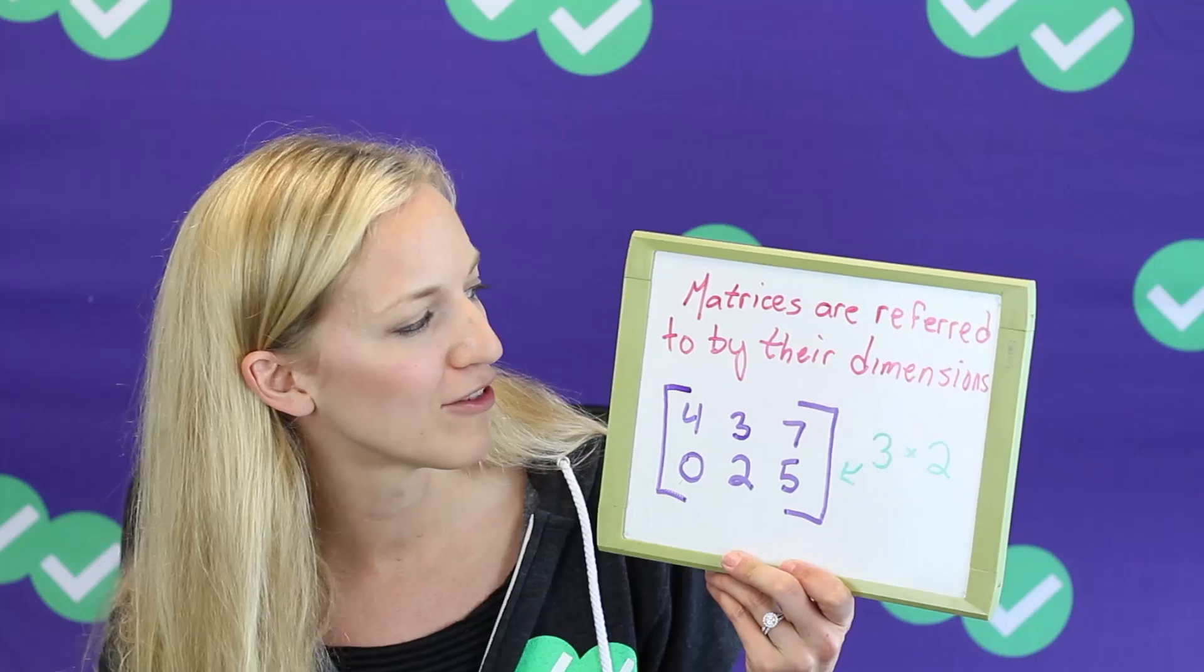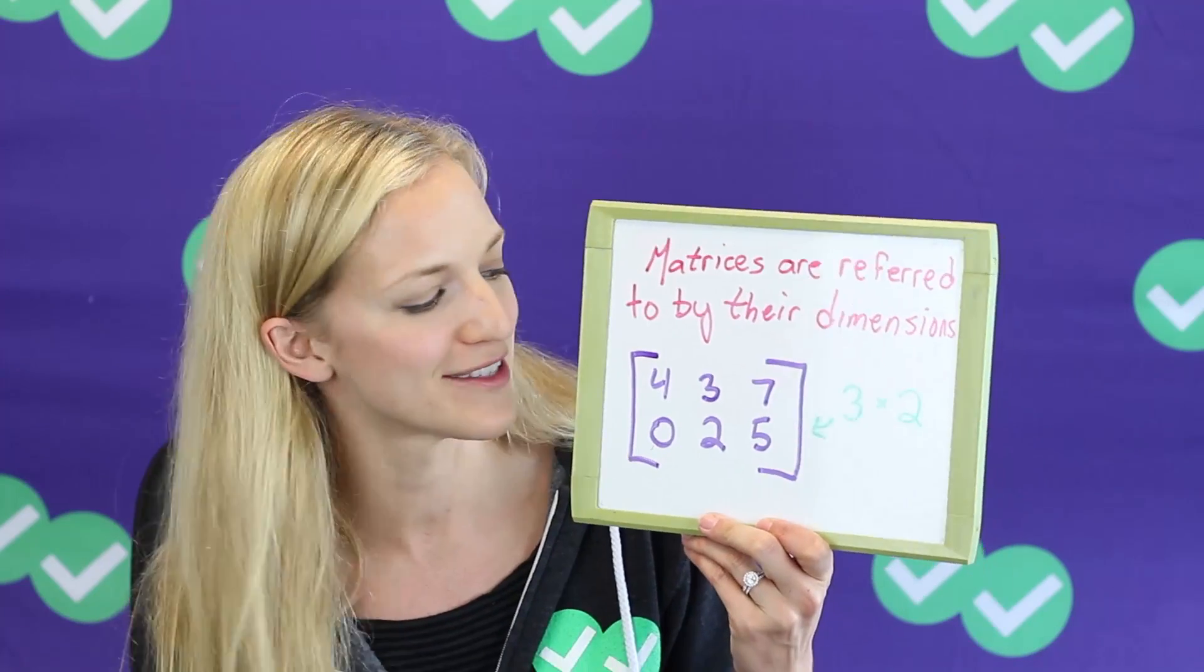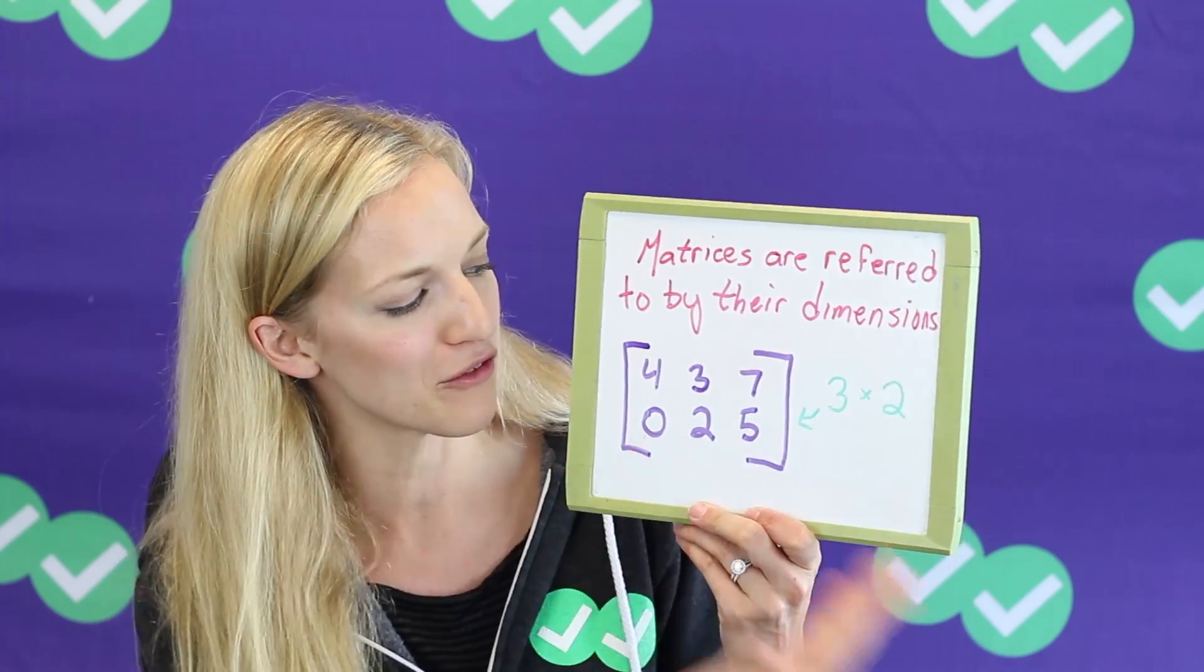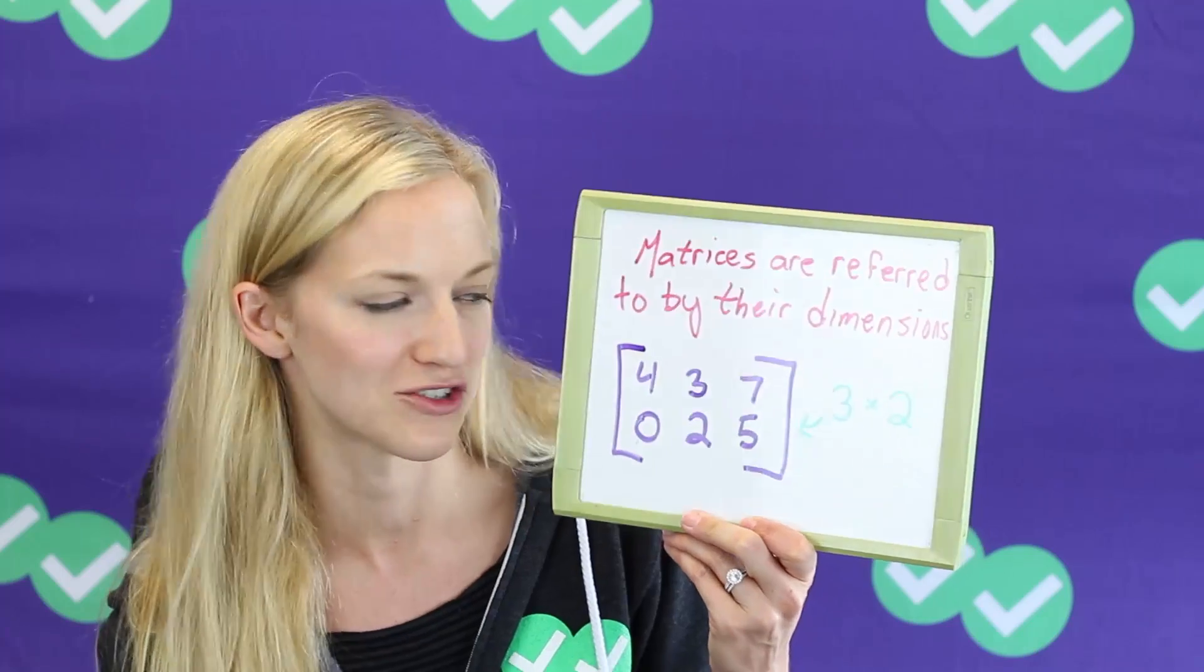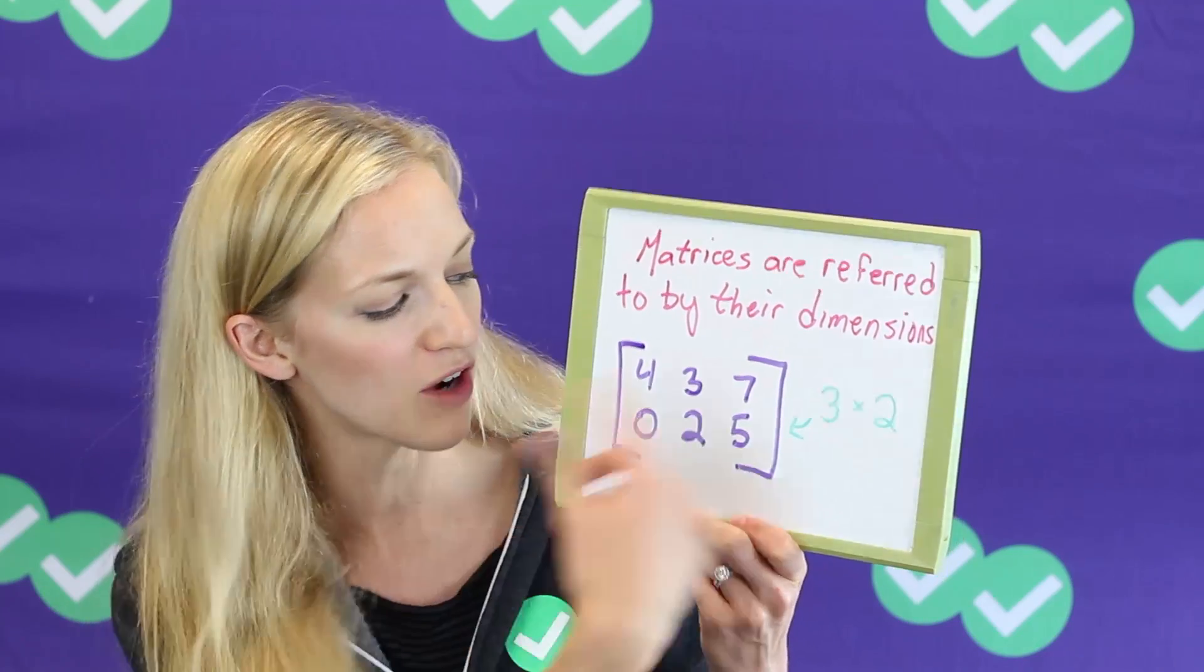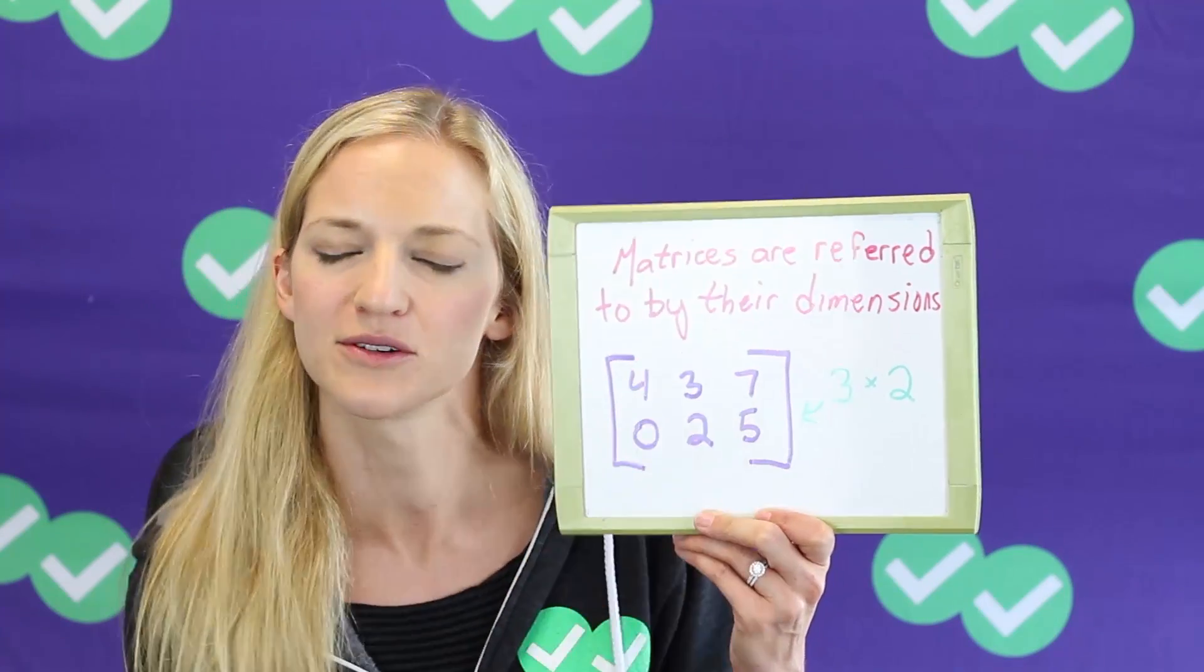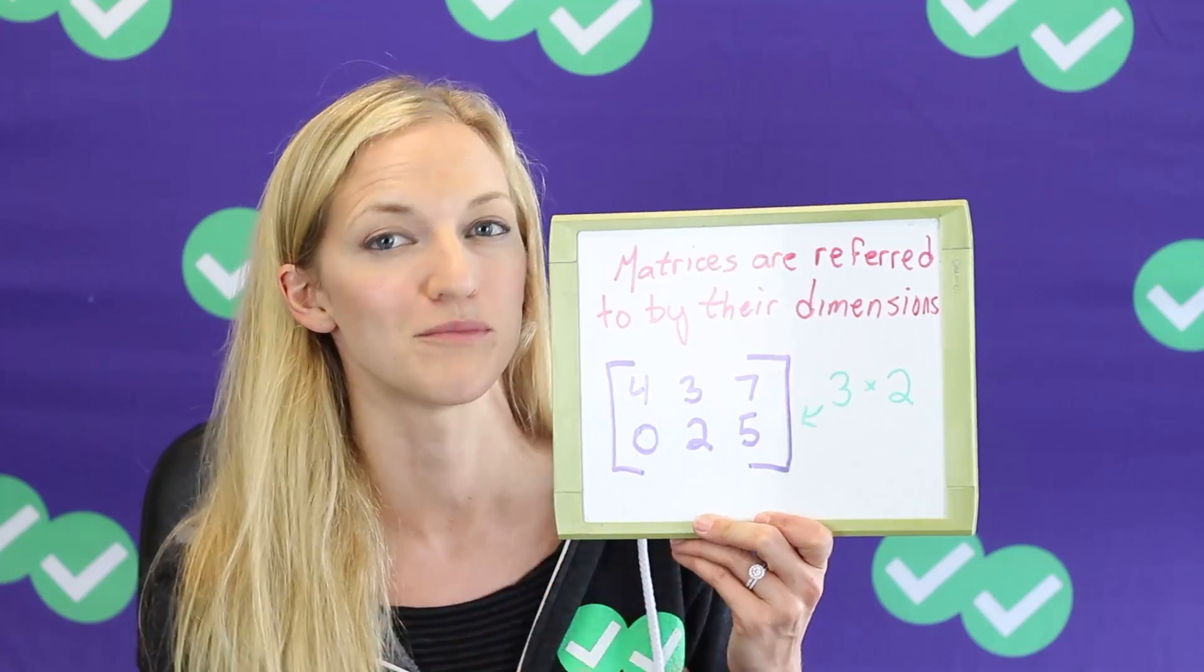All right, so let's start with the basics. Matrices are referred to by their dimensions. So for example, this is a three by two matrix. We talk about it in terms of rows and then columns. Three rows, two columns, it's a three by two matrix. All right, that was easy.